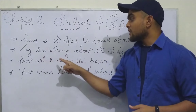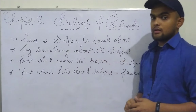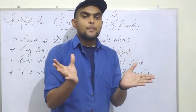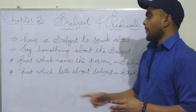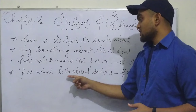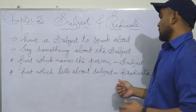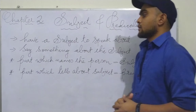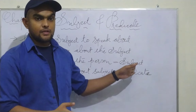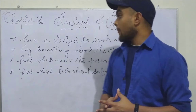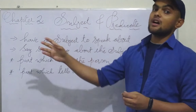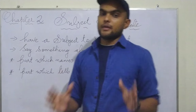The part which names the person — I said everything under the sky has a name — the part which names the person or thing is called the subject. The part which tells about that subject — what the subject does — is called the predicate. So the part which names the person or thing is the subject, and the part which tells about the subject is called the predicate.